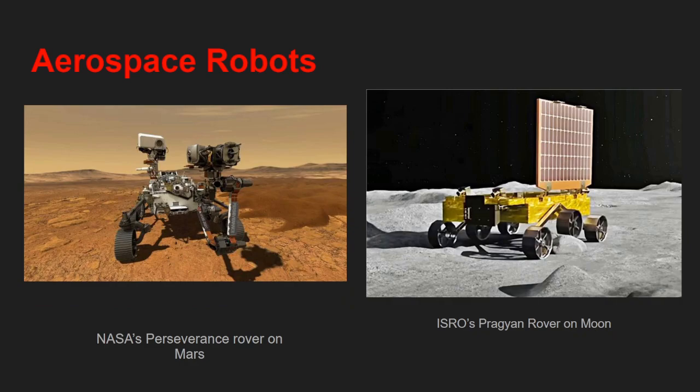Aerospace robots are generally useful for space exploration. On the left you can see NASA's Perseverance rover, a highly advanced rover sent a few years ago that explores the surface of Mars and sends scientific data back. On the right is ISRO's Pragyan rover on the Moon, sent with the Chandrayaan mission, which sent pictures of the Moon's surface and scientific data back to Earth.